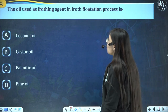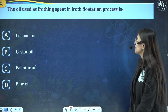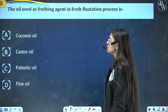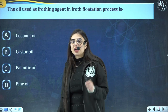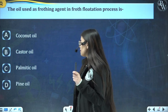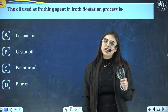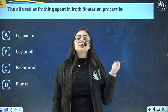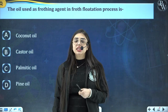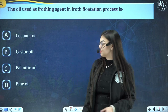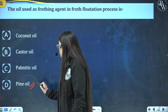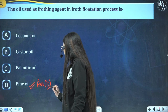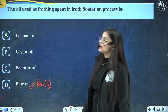Q4: The oil used as frothing agent in froth flotation process is? A: coconut oil, B: castor oil, C: palmitic oil, D: pine oil. Answer is option D — pine oil, which is used as a collector in the froth flotation process.